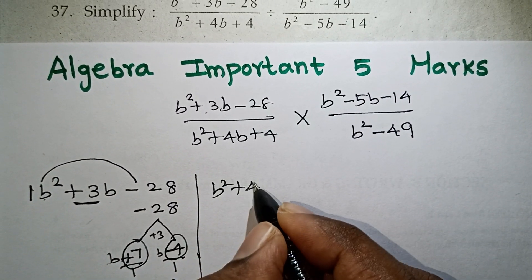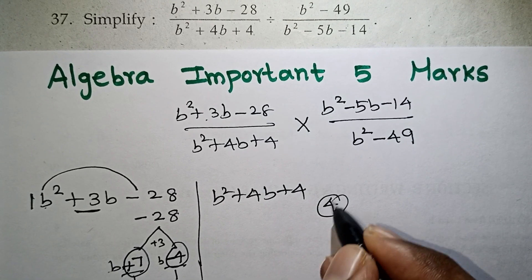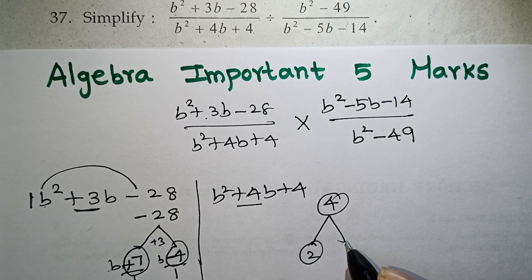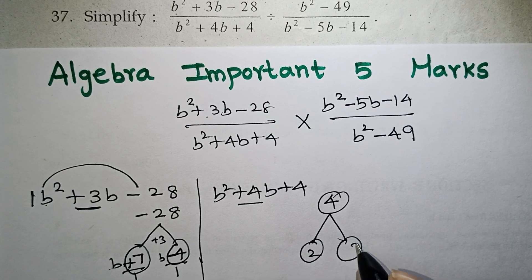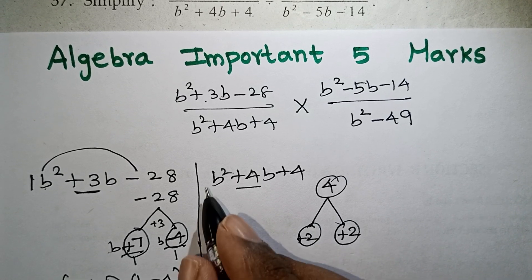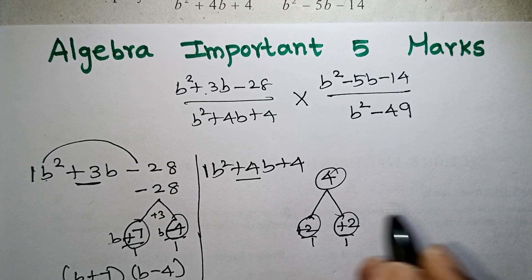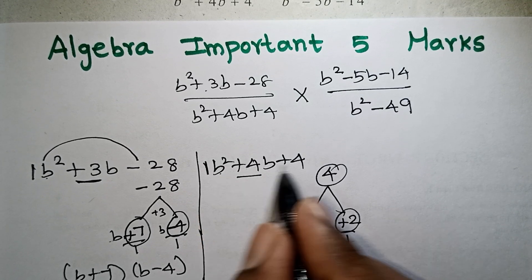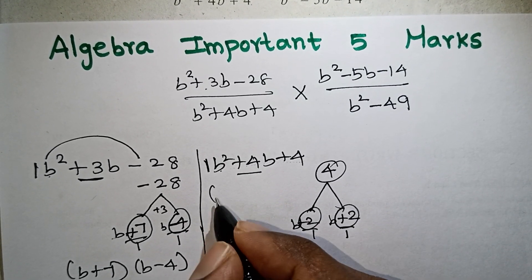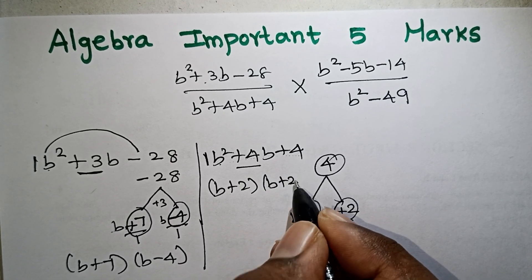Next, b squared plus 4b plus 4. If you multiply 4 and add 4, you get plus 2 and plus 2. Two 2s are 4, multiply 4 and add 4. So the factors are b plus 2 and b plus 2. That's correct.